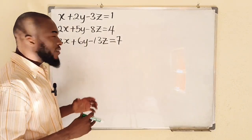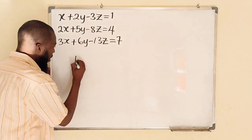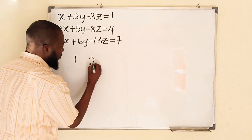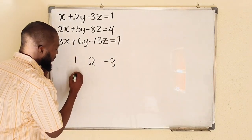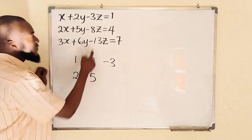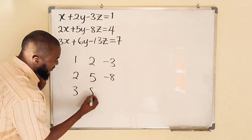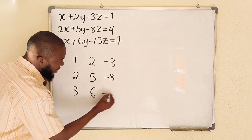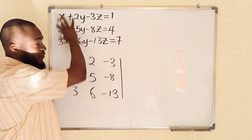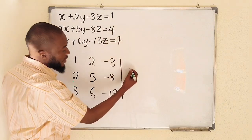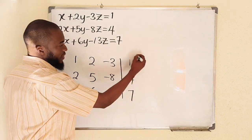The first step is to form an augmented matrix — a matrix of the constant coefficients. The coefficient of x in the first equation is 1, coefficient of y is 2, coefficient of z is negative 3. Second equation: coefficient of x is 2, coefficient of y is 5, coefficient of z is negative 8. Last equation: 3, 6, negative 13. Then draw a vertical line to separate coefficients from the right-hand side constants: 1, 4, and 7. This is our augmented matrix.